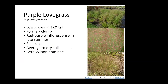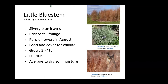Little bluestem — the appearance can vary depending on what region you're in. In the variety I have, it does have the silvery blue leaves that turn a bronze color in the fall, though mine has not bloomed with the little purple flowers. I also have big bluestem, which is extremely similar and grows up to eight feet tall — last fall I had a deer give birth to fawns in my big bluestem.